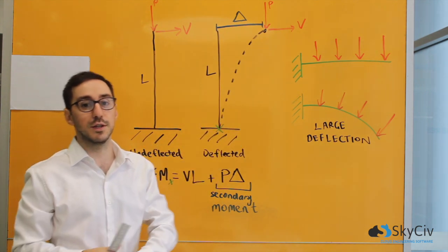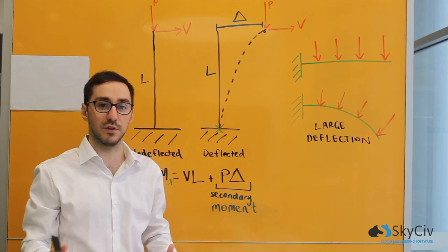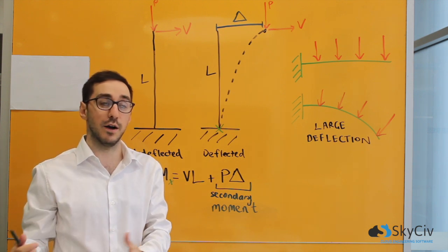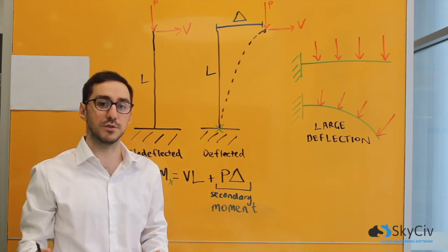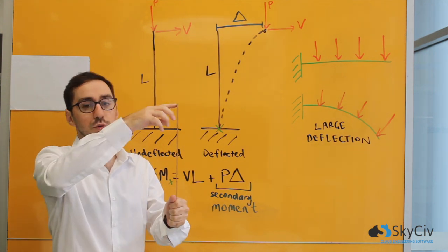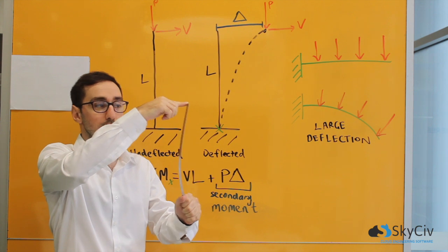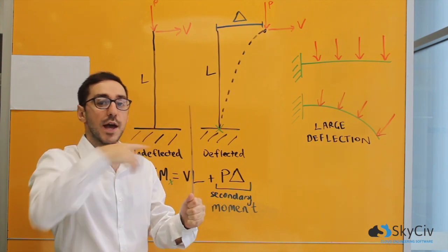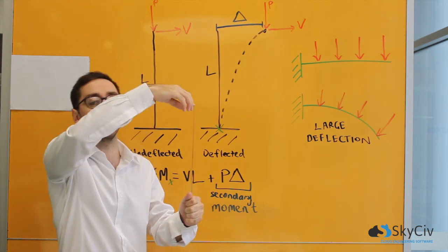A P-delta analysis usually comes into play when you've got those larger deflections. An example of a structure like that would be a multi-storey frame that has a lateral load such as a wind load pushing it sideways and a gravity load which would be a downwards load.